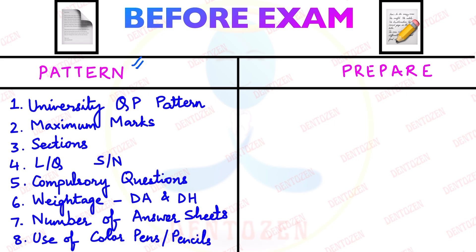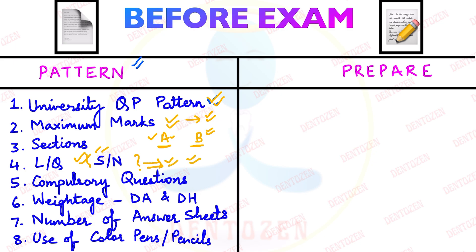Knowing the question paper pattern is important so you can know what type of questions are there and how many. Maximum marks matter so you know what you require to pass. Section division is important because sometimes section A and section B questions have to be attempted on two different pages or booklets. Knowing the number of long questions and short notes is very important so you can manage your time well, because as a first year student, your tendency is to keep writing the question you know well and leave no time for short notes.